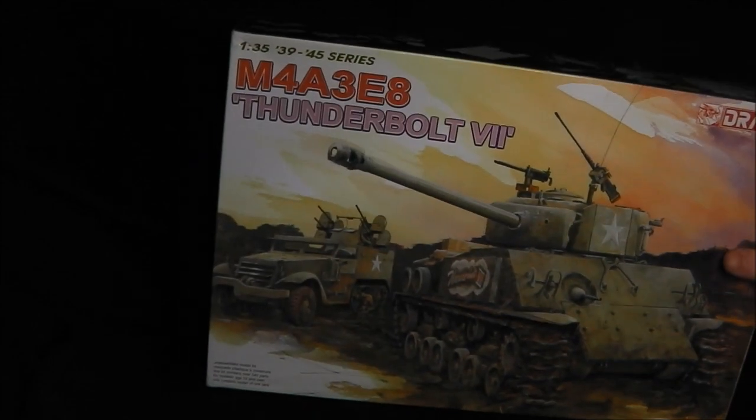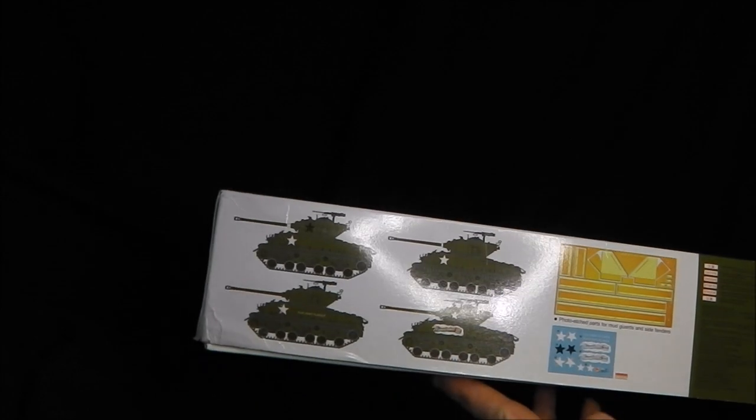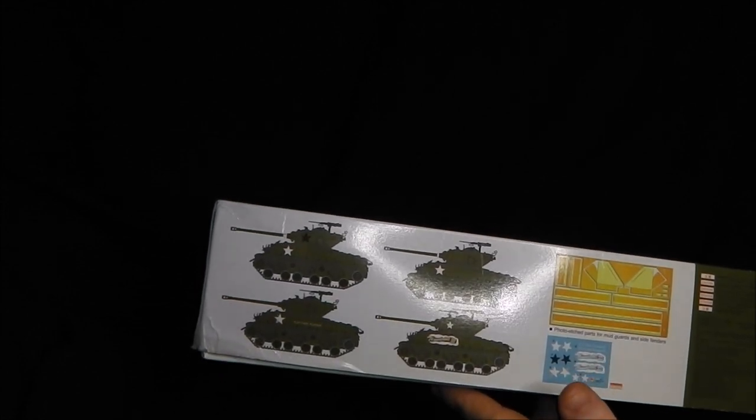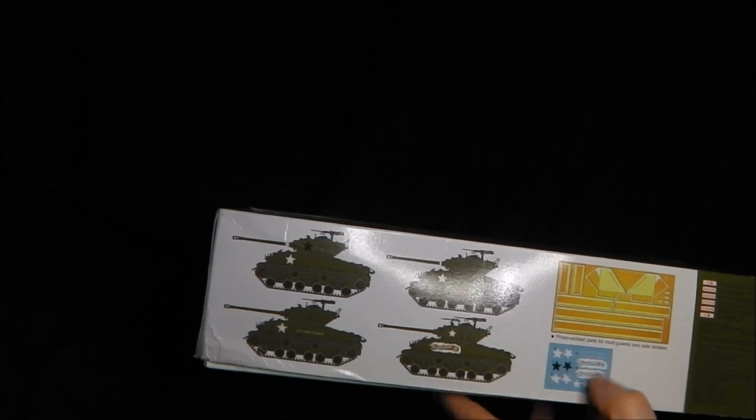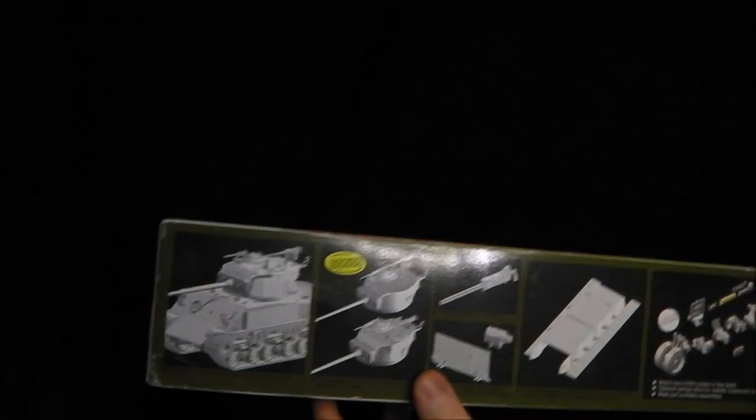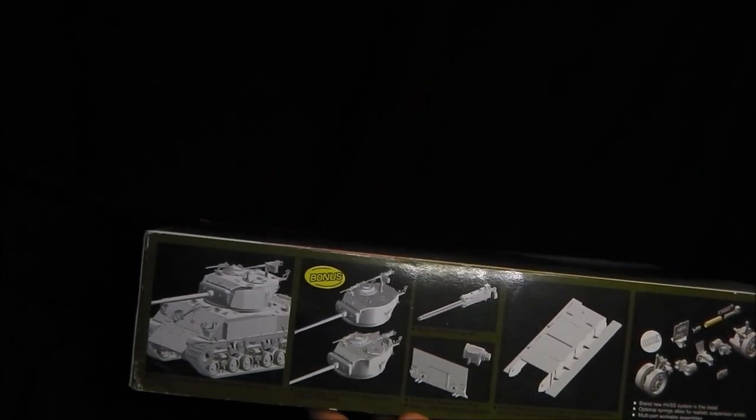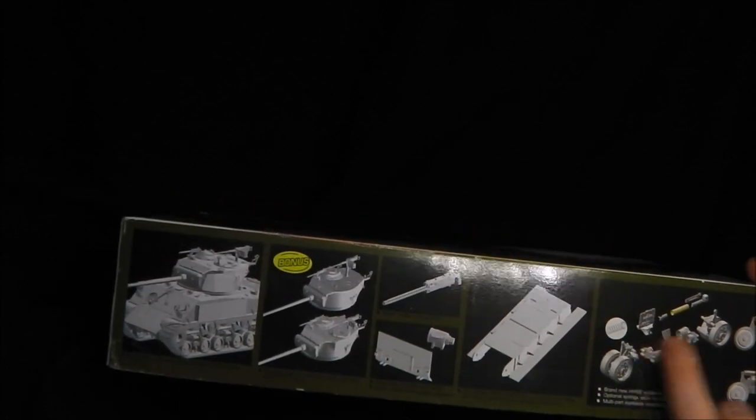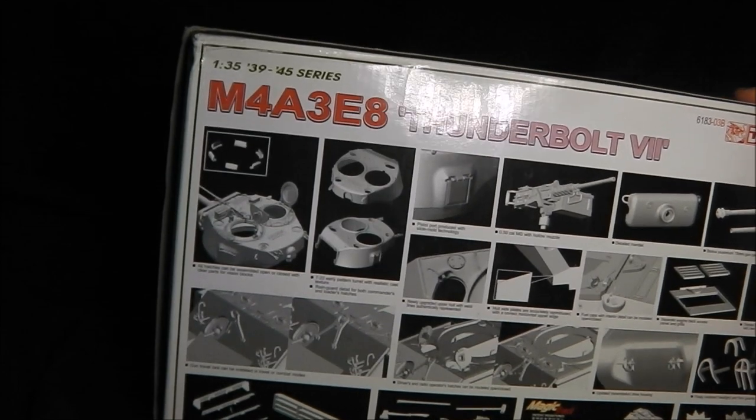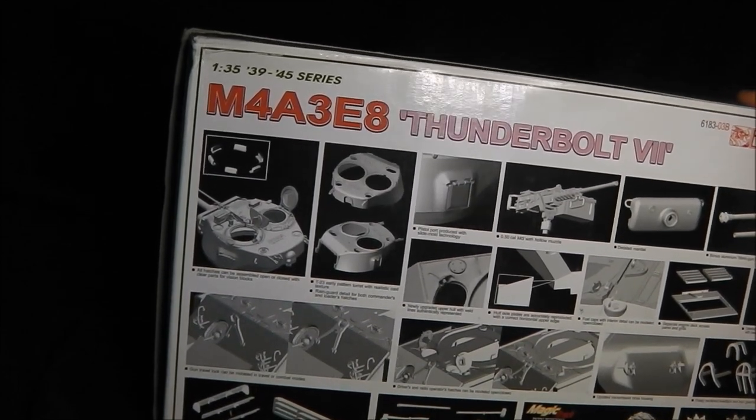As always, we get a pretty attractive box art. We have some imaging of the decal and marking call-outs. So we get four markings, one of them being Thunderbolt 7, and some other E8 variants. We also get some photo etch, some cartographed decals. We get some CAD drawings of the various features of the kit. Apparently, we get some spring and brass tubing for the HVSS suspension, so perhaps this is workable. We'll see when we get to building this kit, as well as some other CG drawings of the various kit features.